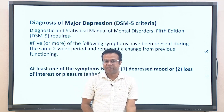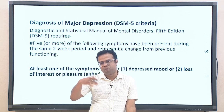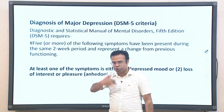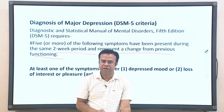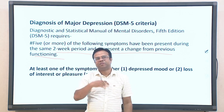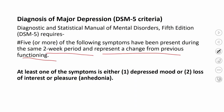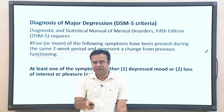Major depression's diagnostic criteria include at least five or more symptoms present for the same two-week period, representing a change from previous functioning. At least one of the two primary symptoms must be present: depressed mood or loss of interest. In most cases both are present, but at least one is required.